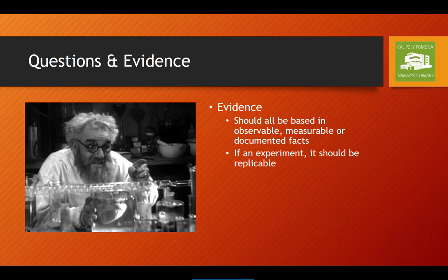To answer these questions, we gather evidence. Evidence can take a whole lot of different forms — it can be archival texts, survey responses, research data, field measurements, etc. There are, however, a couple of things all of this evidence should have in common. One, it should all be based in observable, measurable, or documented facts. Two, if it involves experimental results, it should be replicable, meaning that someone else who did the experiment using the same methodology should get the same results.